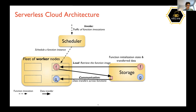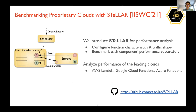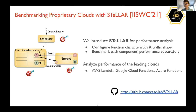Because functions are stateless and cannot hold or share state, to reason about the performance of the entire cloud we needed a way to benchmark different foundational components. This is what STELLAR was designed for. STELLAR allows configuring function characteristics and traffic shape to stress any of these components and understand how performance in one cloud compares to the corresponding components in another cloud, allowing definitive conclusions about which component is a fundamental bottleneck.